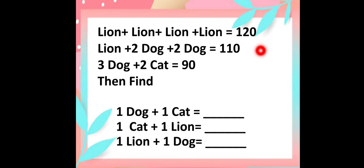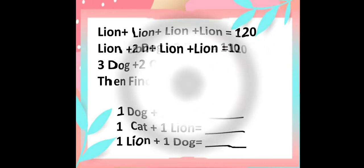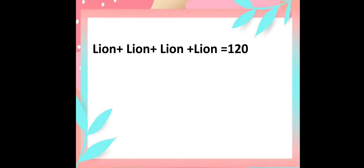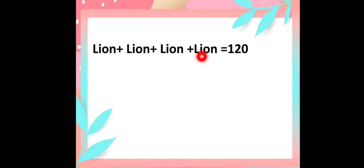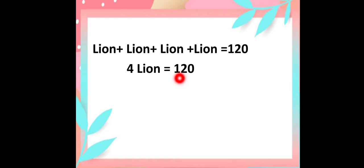For this, I will take the first equation. Here I have line plus line plus line plus line is equal to 120. There are 4 lines here, so after adding I get 4 times the line is equal to 120. You can think like this: by what number should you multiply 4 to get 120?